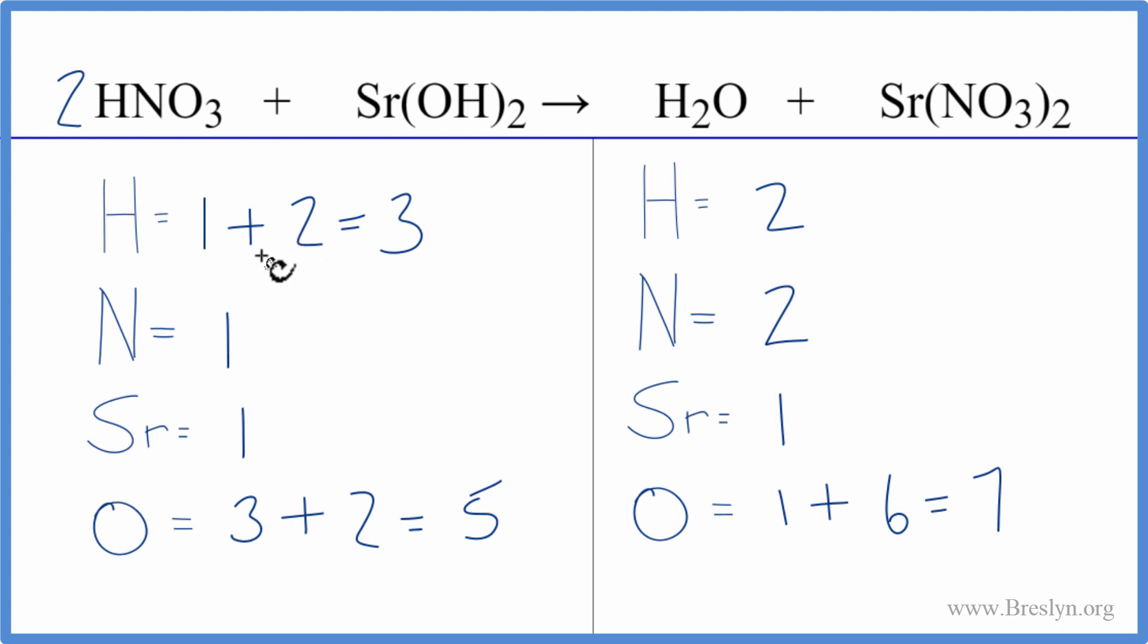So now we have to update our hydrogens and oxygens. So we have one times two, two hydrogens there, plus two times the one, two. So now we have four hydrogens, one nitrogen times the two, and that balanced the nitrogens. That's what we were trying to do.